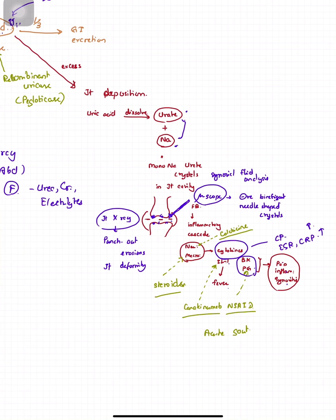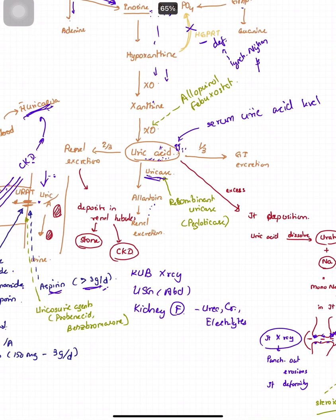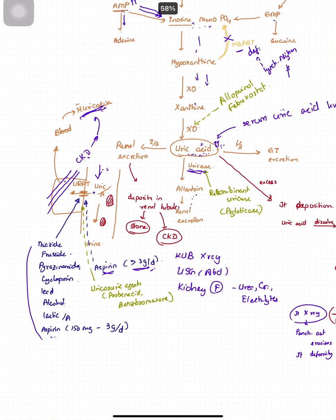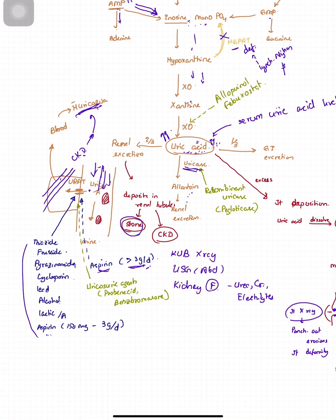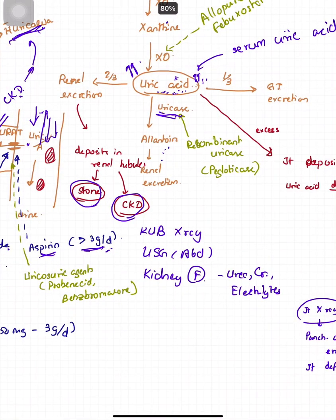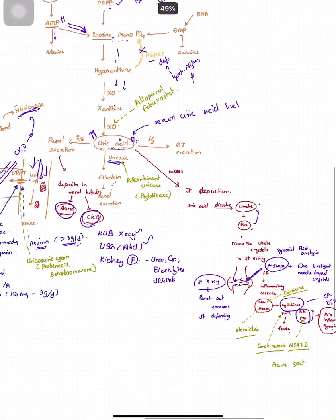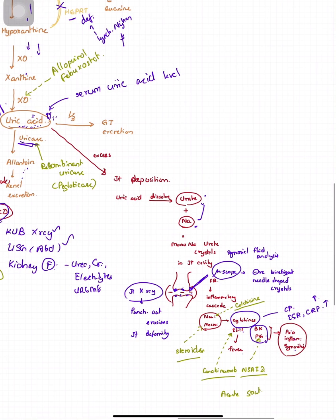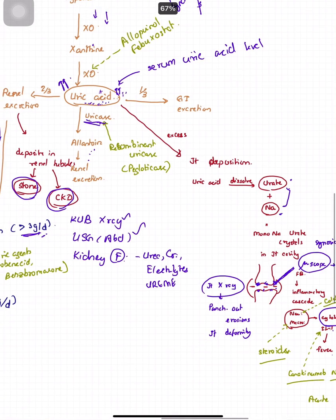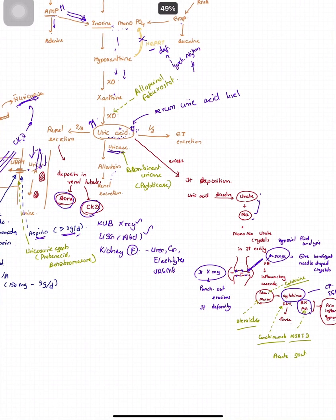As a complication, more uric acid coming down through the renal tubule may obstruct or deposit in the renal tubule, leading to stone formation. If tubular function is impaired, it may lead to CKD. These are also complications of hyperuricemia and gout. You can do a KUB X-ray to detect stones, ultrasound abdomen, and kidney function tests for CKD, such as urea, protein, electrolytes, and urine examination.